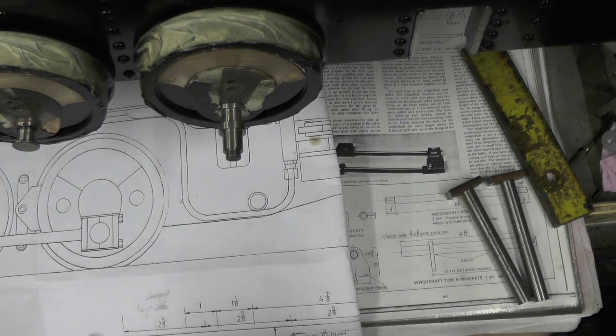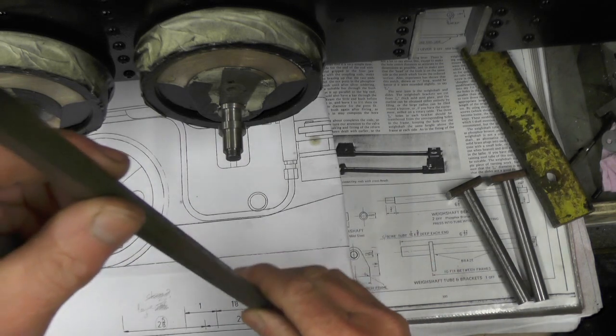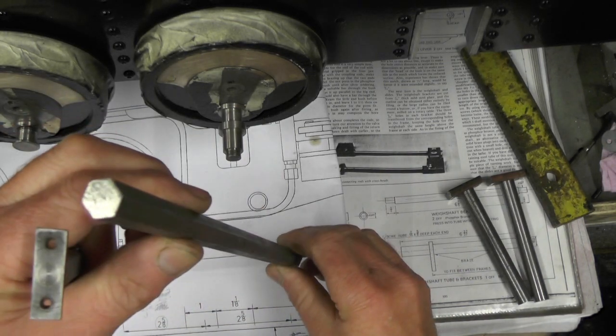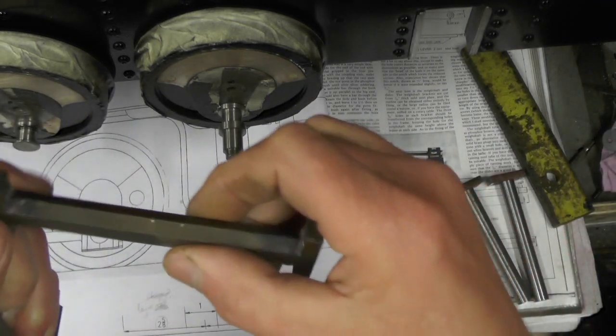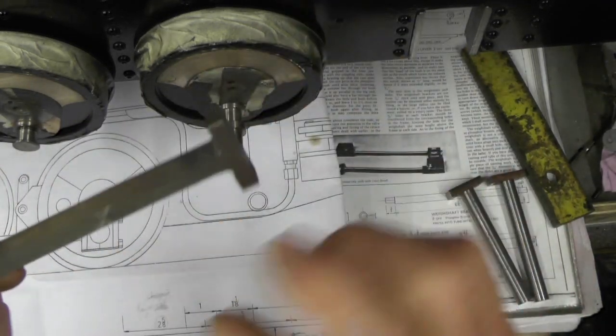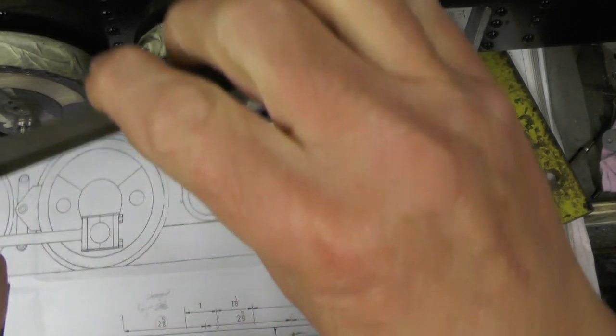Because I've got no three-eighths bar in stock, and I like to do things on a budget build and utilise what I've got. And I've got quite a lot of this hexagonal bar. So, my first option, I've done a prototype, mill the sides of this hexagon down to three-eighths to give me that profile.